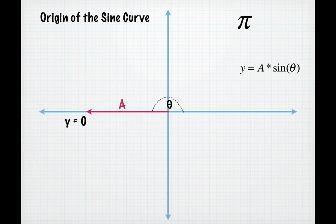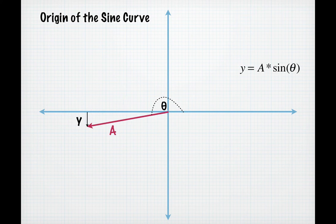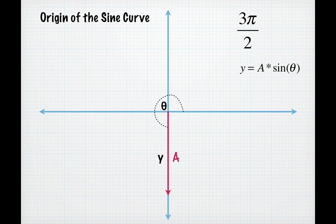This occurs when our angle is pi radians or 180 degrees. As we continue to rotate, our y values will become negative and they will increase until they reach a maximum negative value of A and that will occur at 270 degrees, which we're going to call 3 pi over 2 radians.